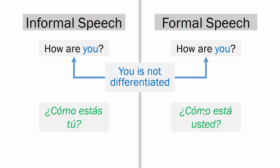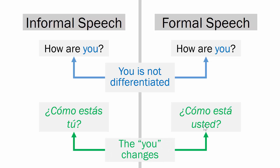You may have noticed that 'cómo' and 'estás/está' are similar words, and you're right — 'cómo' means 'how' in both. The word that really changes is the 'you.' 'Tú' is 'you' in an informal, relaxed, and comfortable way, and 'usted' is the formal 'you.' Both mean 'you,' but there is a change depending on who you're speaking with.